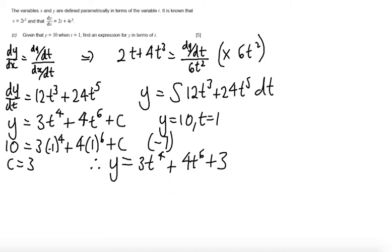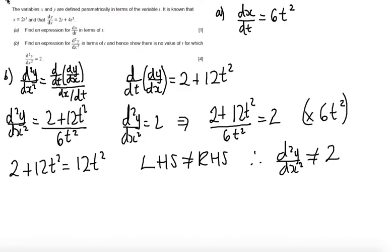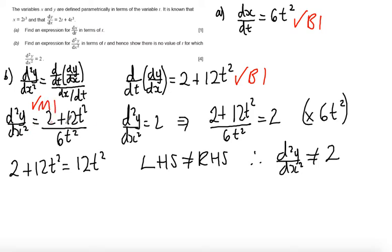Let's look at how this question is marked. In Part A there is a standalone mark for getting dx/dt equals 6t squared. In Part B there is a standalone mark for differentiating dy/dx with respect to t and getting 2 plus 12t squared. There is a method mark for using d²y/dx² equals the derivative of dy/dx over dx/dt, and an answer mark for the correct expression (2 plus 12t squared) over 6t squared. Finally there is a mark for the argument showing that substituting d²y/dx² equals 2 leads to a contradiction.